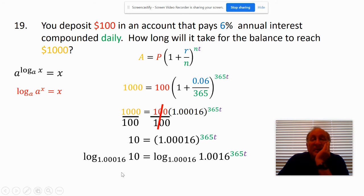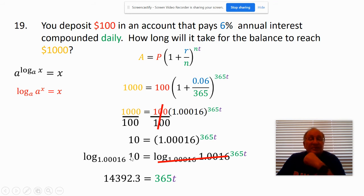All right, so basically you want to cancel those out there. So I want to do the log of 1.00016 to the power. This 14,392 equals 365t.